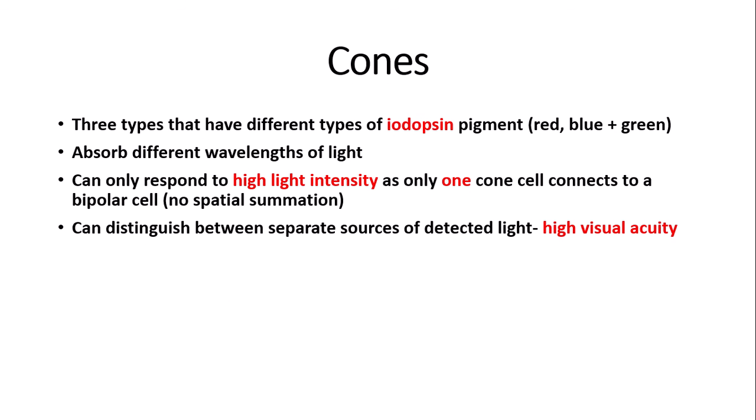Now we're going to get on to cones. There are three subtypes of cones, and these three types have different types of iodopsin pigment — don't confuse rhodopsin with iodopsin. The easiest way to remember this is that rhodopsin starts with R and rods starts with R. Cones contain iodopsin, and they contain three different types: red, blue, and green. This means that cones can absorb different wavelengths of light as they have different pigments, so they can detect different colours — not just black and white like rods.